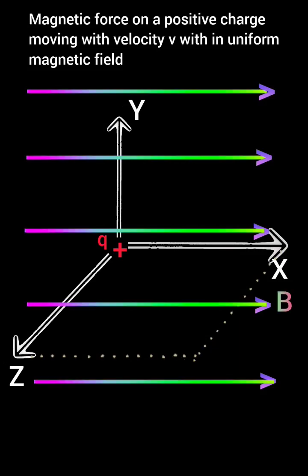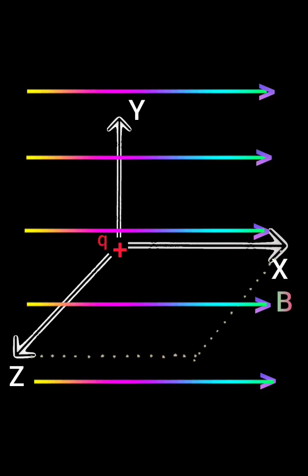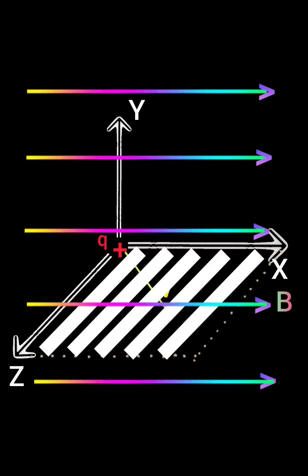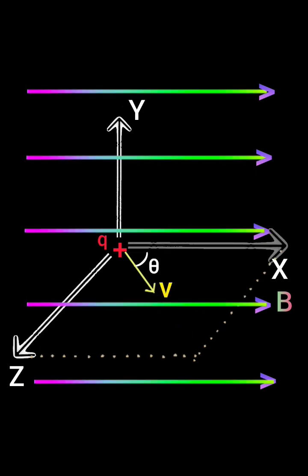Here we have magnetic field in x-direction. A charged particle Q moves in x-z-plane with velocity v that makes an angle theta with x-direction.